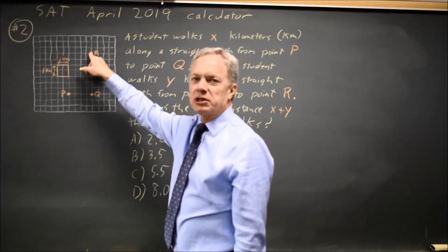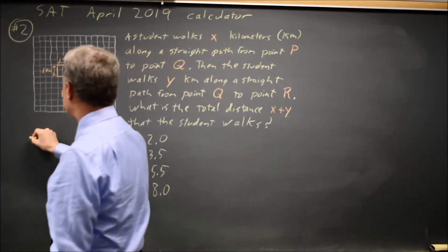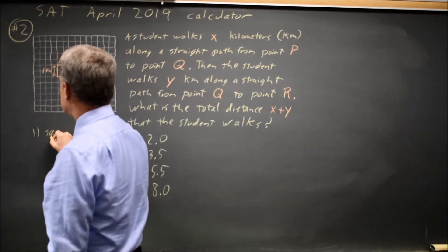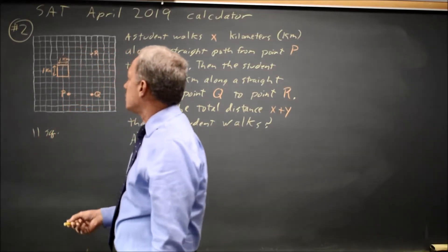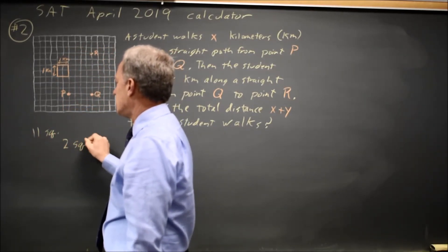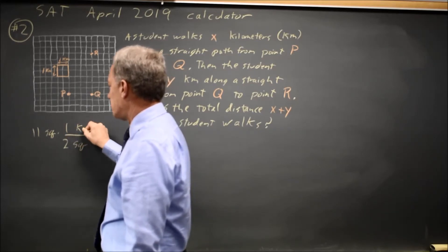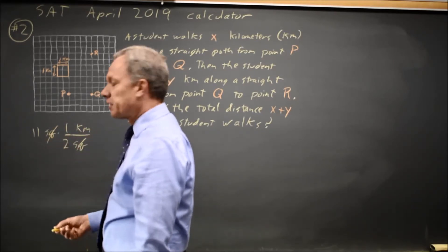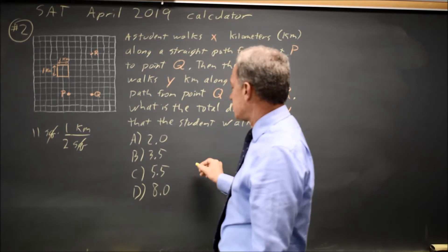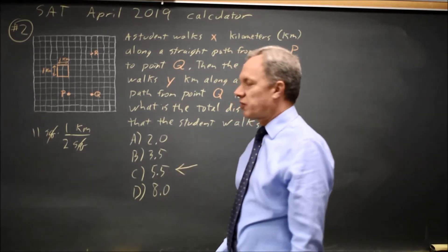So that's a total of four plus seven is eleven squares and then two squares is the same as one kilometer. Squares cancel and we get eleven halves which is five point five.